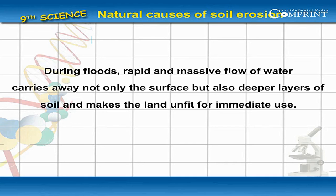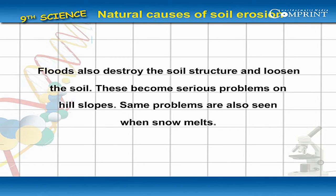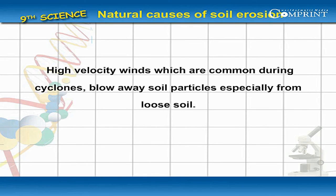This makes the land unfit for immediate use. Ants also destroy the soil structure and loosen the soil, which become serious problems on hill slopes. The same problems are also seen when snow melts. High velocity winds, which are common during cyclones, blow away the soil particles, especially from loose soil.